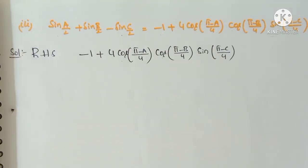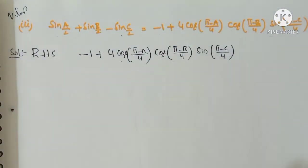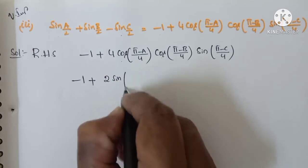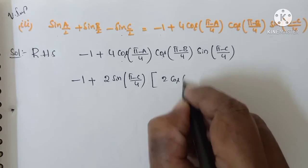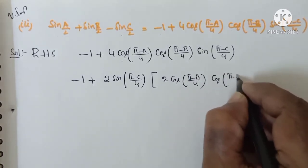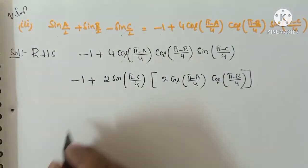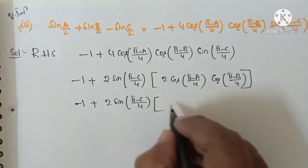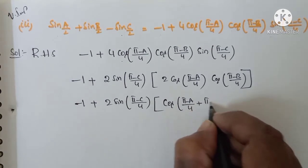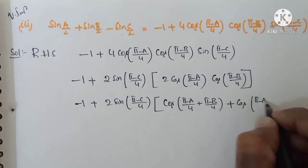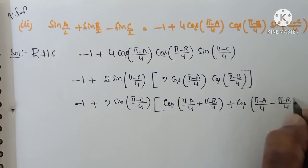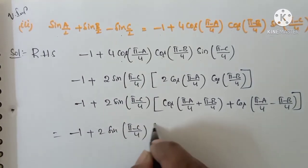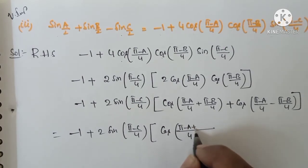Taking RHS and working towards LHS. First: −1 + sin((π−C)/2) becomes −1 + 2 sin((π−C)/4) · cos((π−C)/4). Then: −1 + 2 sin((π−C)/4) · [2 cos((π−A)/4) · cos((π−B)/4)]. Apply 2 cos A · cos B = cos(A+B) + cos(A−B): −1 + 2 sin((π−C)/4) · [cos((π−A + π−B)/4) + cos((π−A − π+B)/4)].